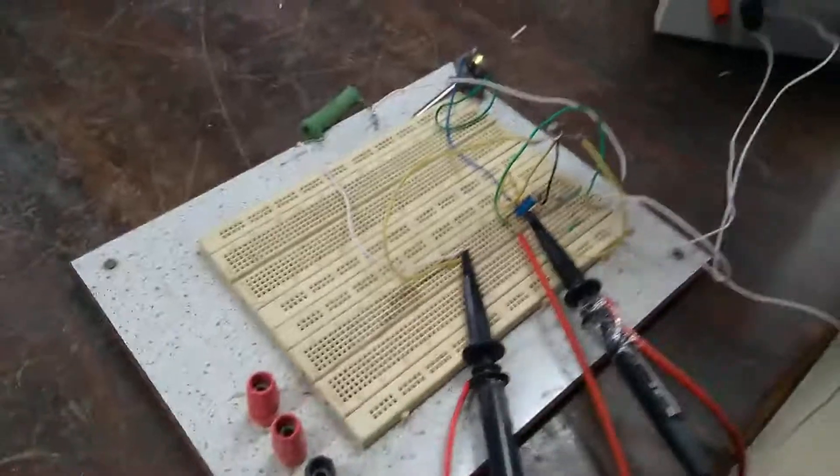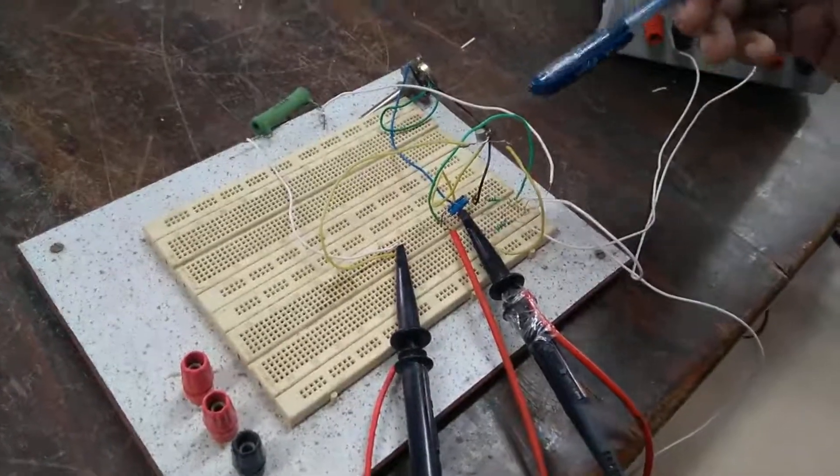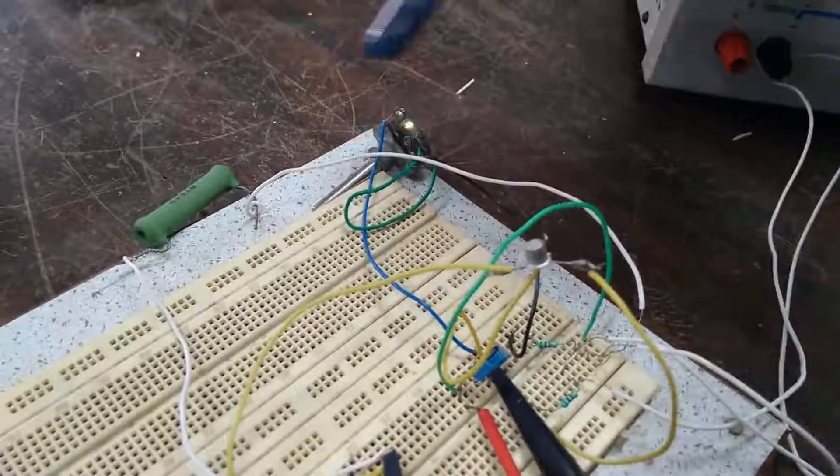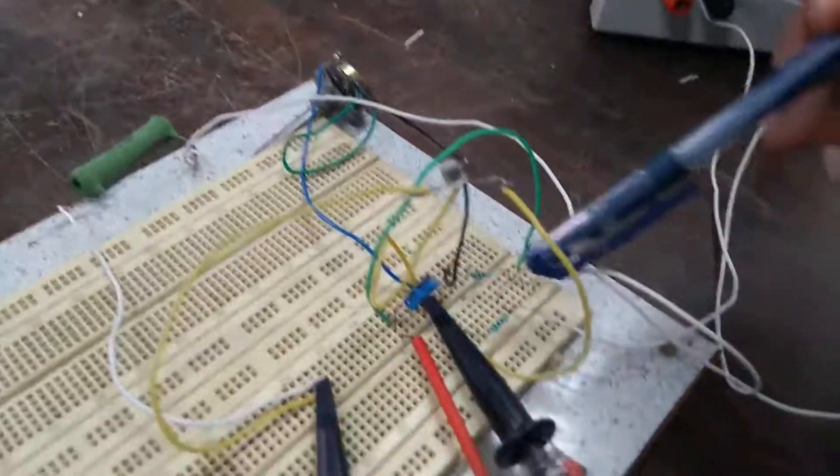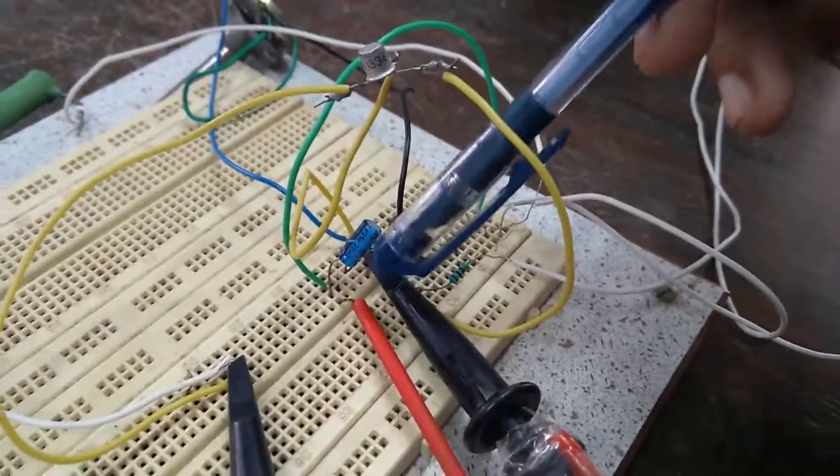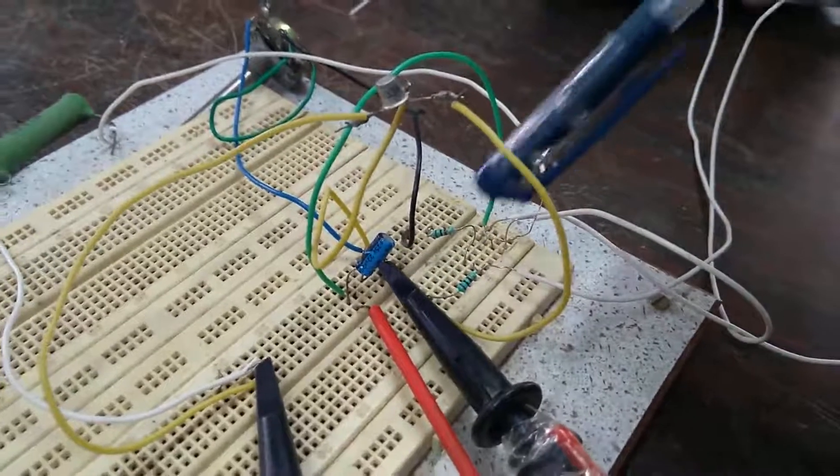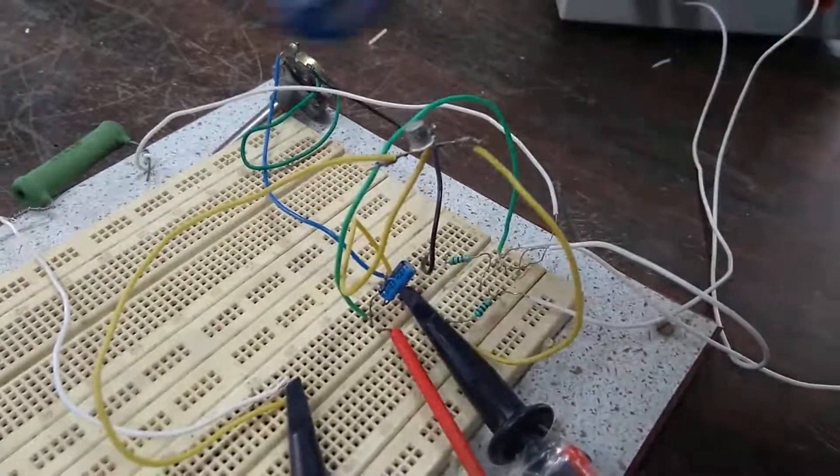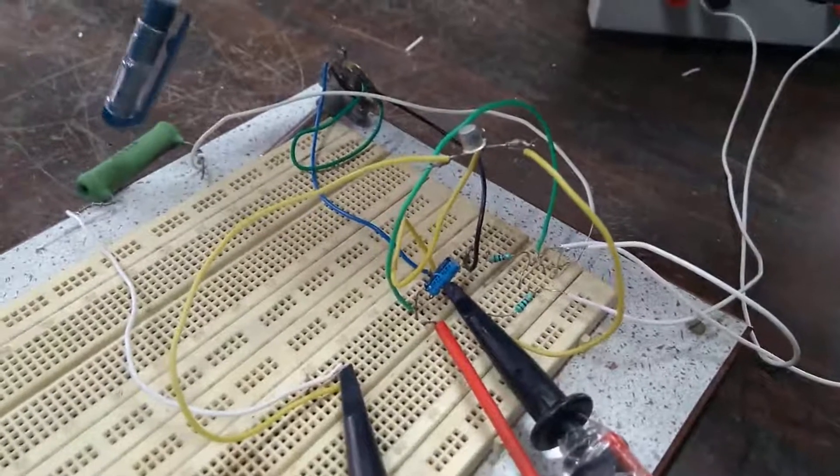The same circuit whatever we have shown in the manual, the same circuit we have connected over here and this is a 100 ohm resistance. This is a variable pot and these are the two 1 kilo ohm resistances. This is the capacitor, polarized capacitor with the certain polarity we have applied. And we are actually observing the voltage across this capacitor, charging and discharging voltage and discharging pulses across this resistance.